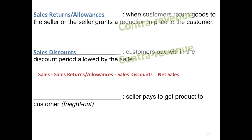Remember, the word "net" simply means that something has been taken out — just like net income means taxes have been taken out. Net sales means we have reduced sales using those contra revenue accounts.